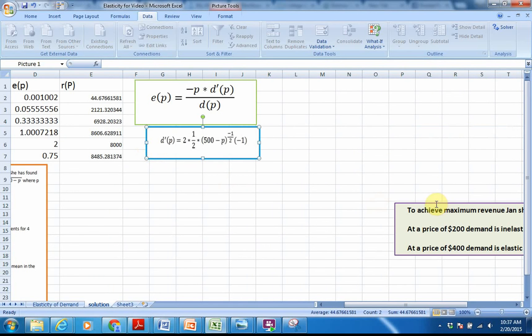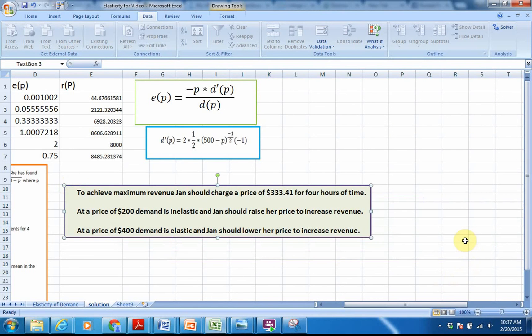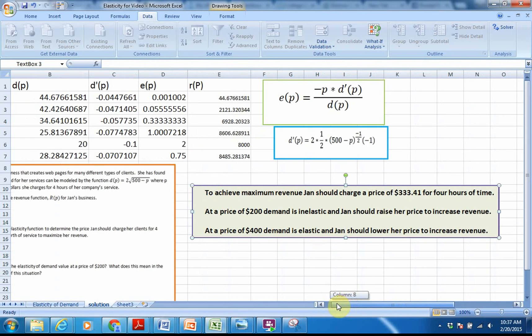And I've actually taken and got some of these written out for you, so let's take a look at what we have. That's where I showed you how we got the derivative, and I just typed that out. And then these are what we would say to answer those questions. To achieve maximum revenue, Jan should charge a price of $333.41 for four hours of time. At a price of $200, demand is inelastic, and Jan should raise her price to increase revenue. At a price of $400, demand is elastic, and Jan should lower her price to increase revenue. I hope that this overview using this problem will allow you to be able to work some of the other problems that we have in our lab manual and online in Blackboard regarding elasticity of demand. Thanks for joining us.